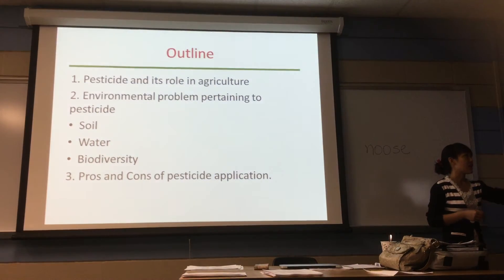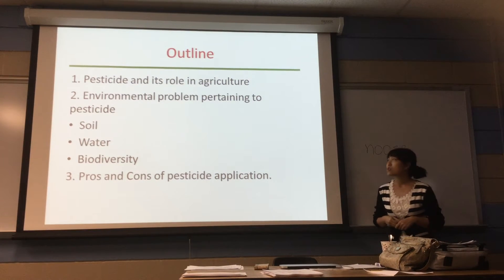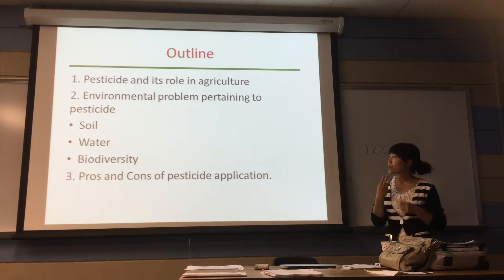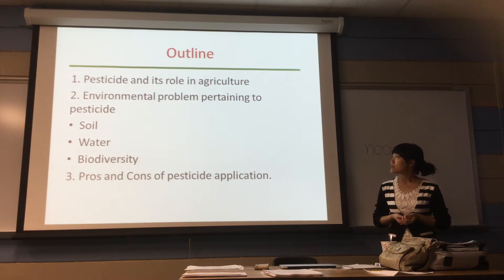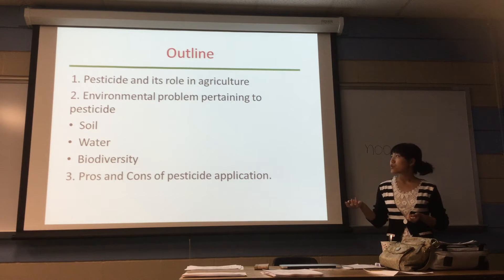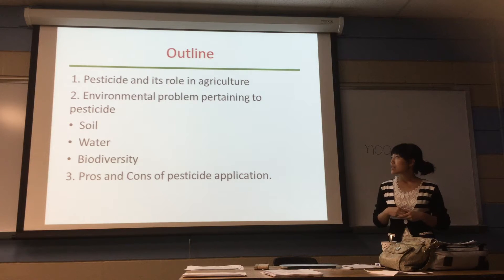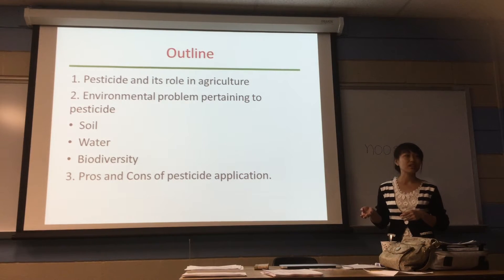So let's look at today — we're going to look at three main points. The first is pesticide and its role in agriculture. The second point is environmental problems pertaining to pesticide: that pesticide has some effect on soil, water, wildlife, and diversity. And the last point, I want to discuss about some roles and controversies of pesticide application in agriculture.